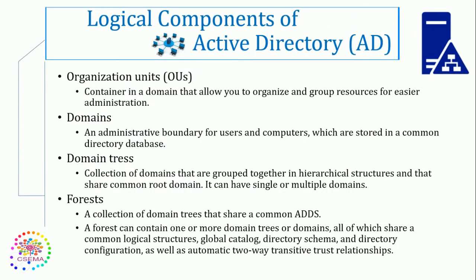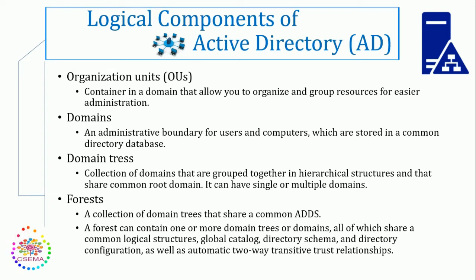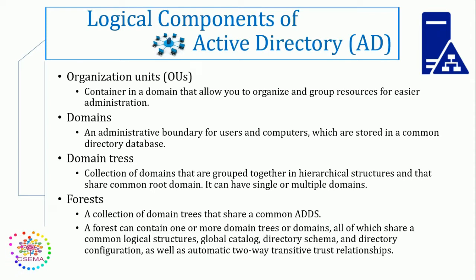Let's look at the logical components one by one. First, we have the organizational unit, or OUs. It is basically a container in a domain that allows you to organize and group resources for easier administration, including delegating administrative rights. The second one is the domain. A domain is basically an administrative boundary for users and computers, which are stored in a common directory database. A single domain can span multiple physical locations or sites and can contain millions of objects. Whatever entry we have in the Active Directory database is called an object.